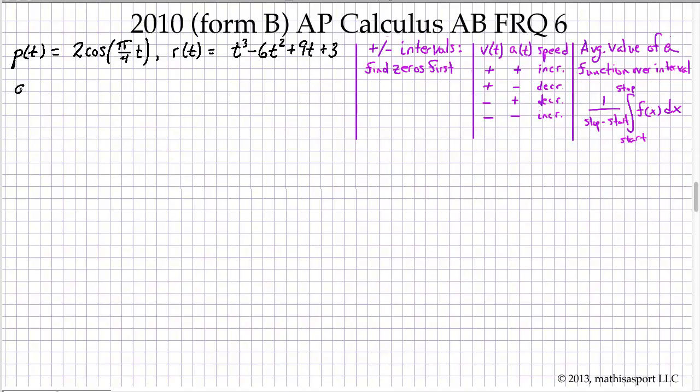Hopefully those three hints are going to be enough to take us through these problems. So let's start with part A. The question is when is the particle R moving to the right? So we immediately have to say that rightward motion means a velocity greater than zero. So we'll take the derivative, dr/dt, and we get 3t² - 12t + 9.